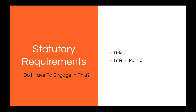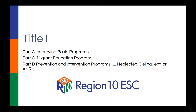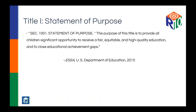The first thing we'll look at with statutory requirements is the overall requirement under Title I, then we'll dig further into Title I Part C. When you go into ESSA, you'll see Title I broken down into Part A, Part C, Part D, and a few other pieces including parent and family engagement. The statement of purpose for Title I says: the purpose of this title is to provide all children significant opportunity to receive a fair, equitable, and high-quality education and to close educational achievement gaps.